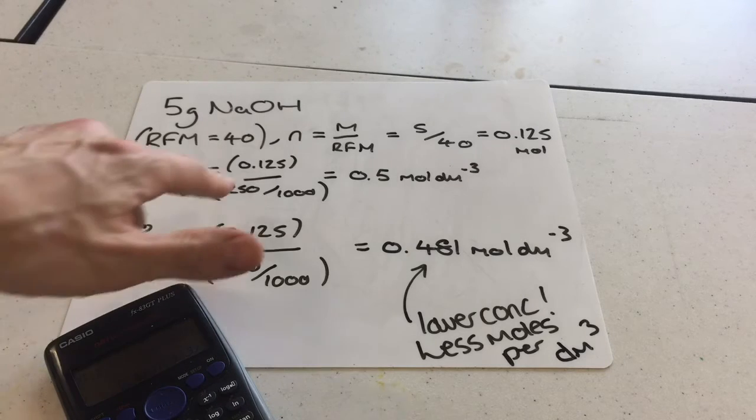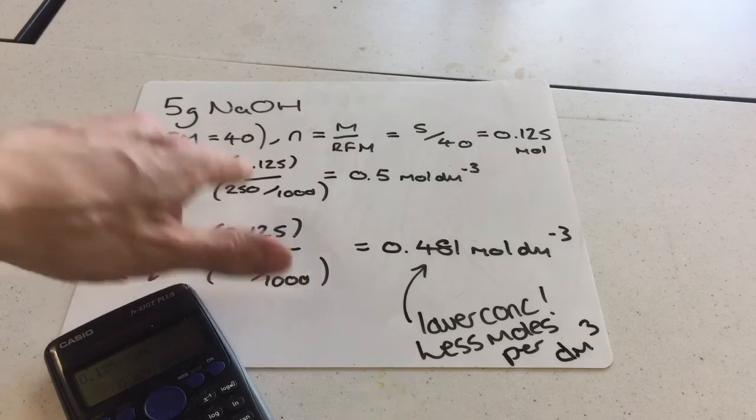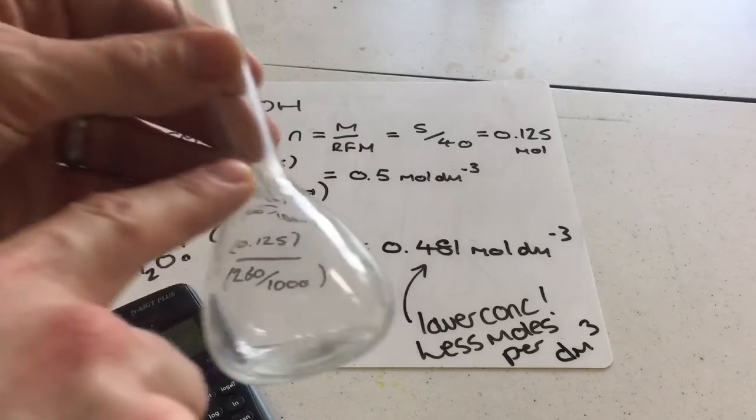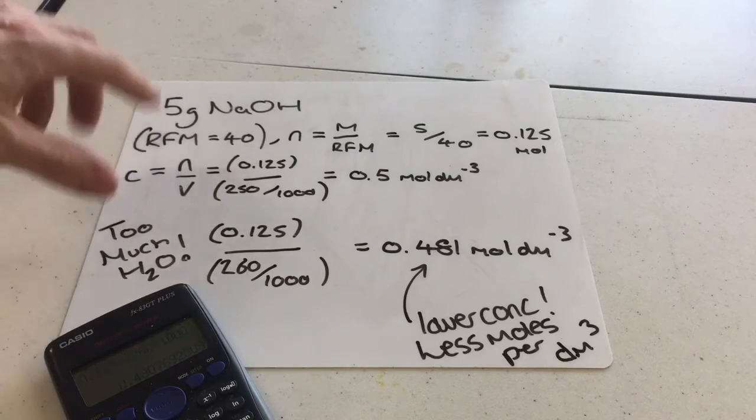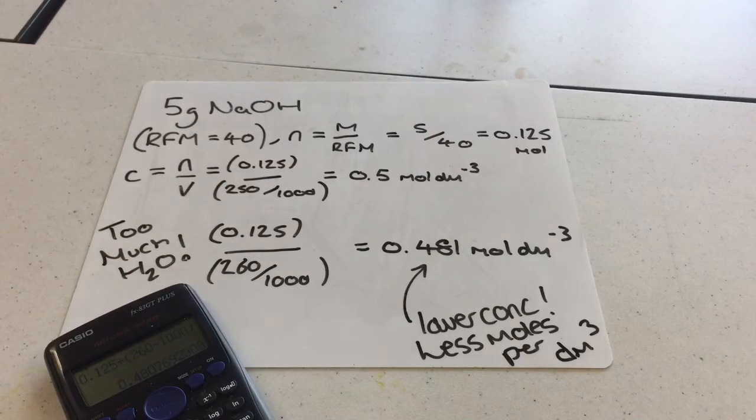You'll notice I haven't said to add 250cm³ of deionised water, because that would take you slightly over the mark due to displacement of the 5g into the 250.